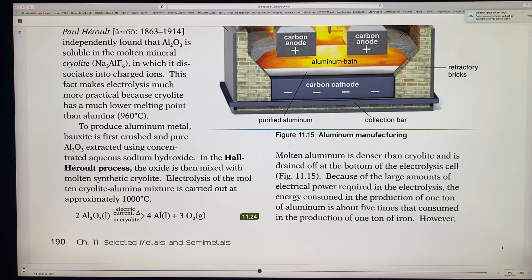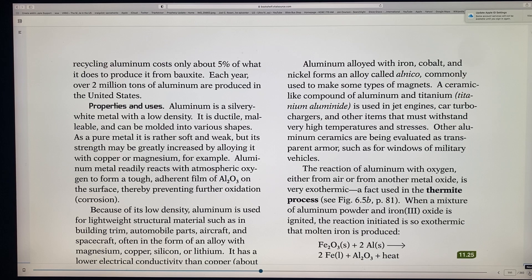So some properties. Figure 11.15 here is a picture of molten aluminum is denser than cryolite and is drained off at the bottom. So that's where the molten aluminum comes from the bottom. Because of the large amounts of electrical power required in electrolysis, the energy consumed in the production of one ton of aluminum is about five times that consumed in the production of one ton of iron. However, recycling aluminum costs only about 5% as it does to produce it from bauxite. So now we recycle a lot of aluminum each year, over 2 million tons of aluminum are produced in the United States. And hopefully a lot of that are recycled.